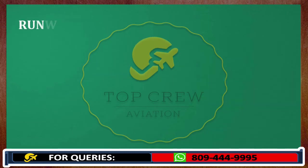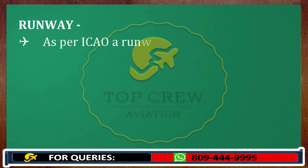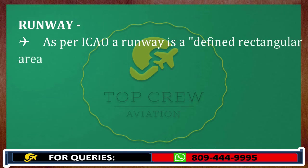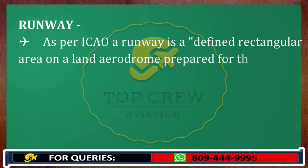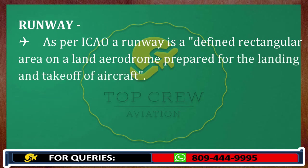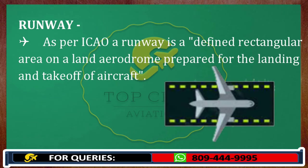Next is runway. What is runway? As per ICAO, a runway is a defined rectangular area on land at an aerodrome, prepared for the landing and takeoff of aircraft. Or we can say a portion of an aerodrome or airport which is used for landing and takeoff is known as runway.